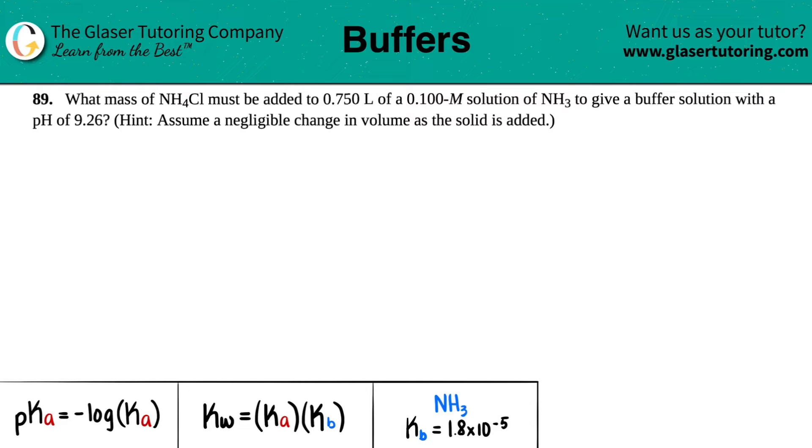Number 89. What mass of NH4Cl must be added to 0.75 liter of a 0.100 molarity solution of NH3 to give a buffer solution with a pH of 9.26? Hint: assume a negligible change in volume as the solid is added. Keep in mind we need to find the mass of NH4Cl in grams.